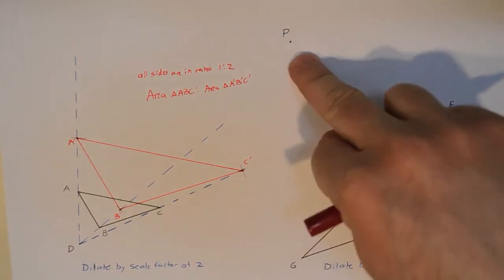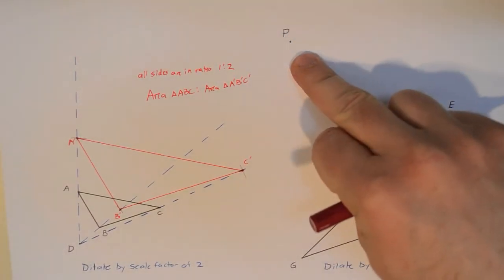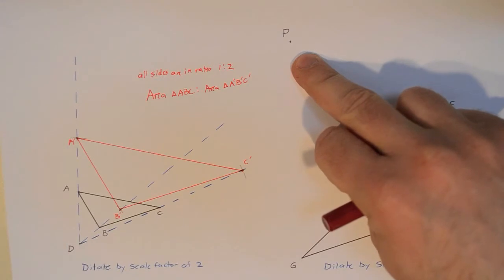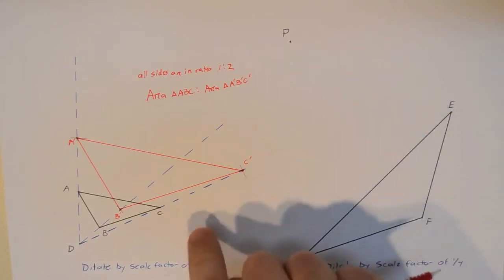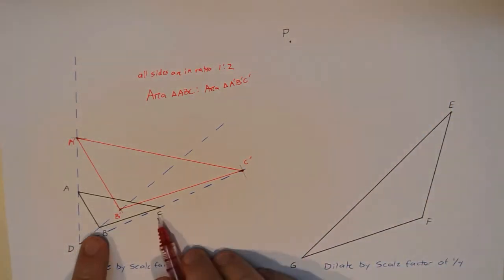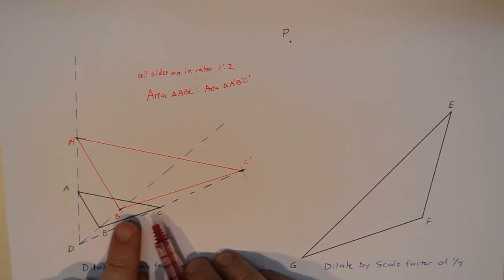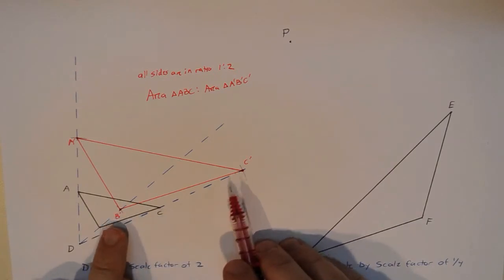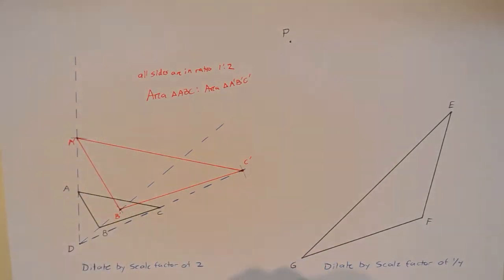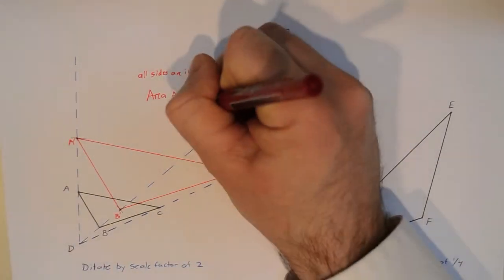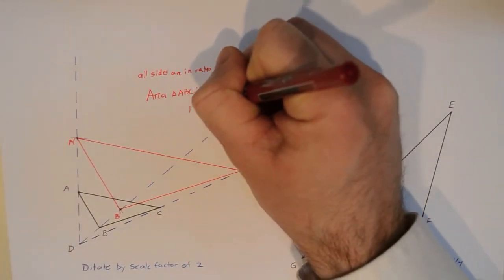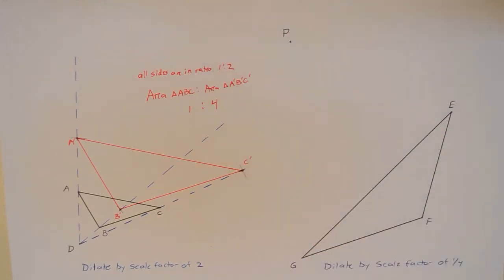We doubled all the lengths, but area is a two-dimensional measurement whereas length is one-dimensional. Think of a simple square: area is base times height. If you double the base and double the height, two times two is four - you increase the area by four. The same happens here: I doubled the base and the height of the triangle, so the ratio of the areas is actually one to four. It goes by the square of the dilation factor.